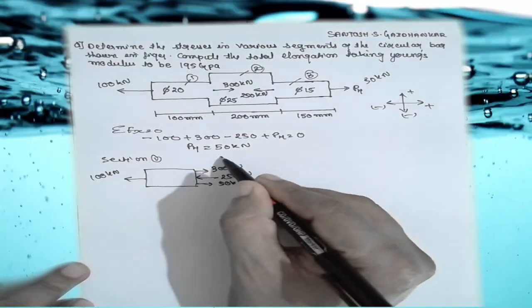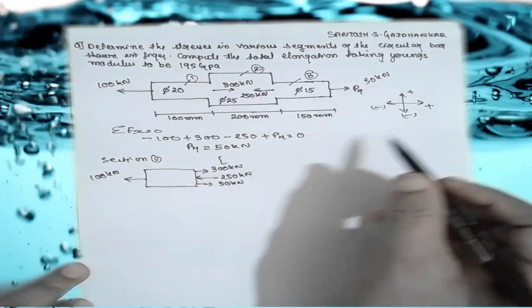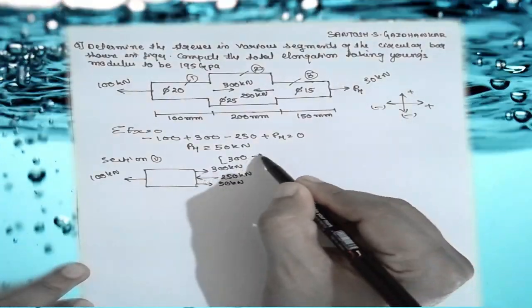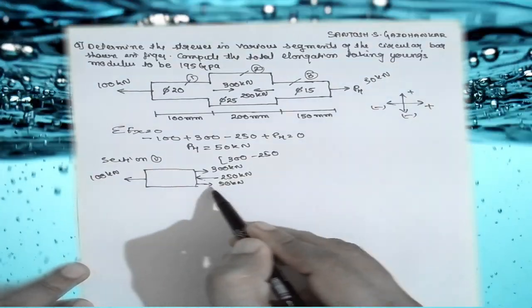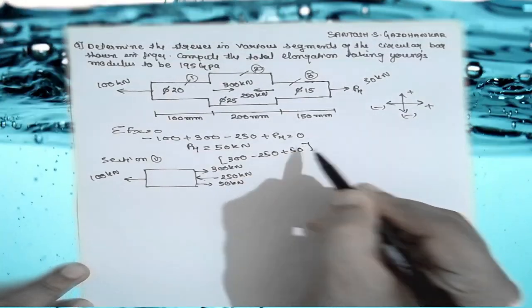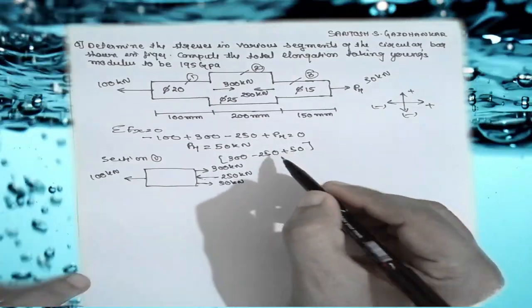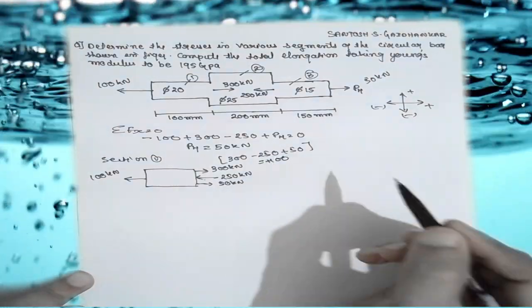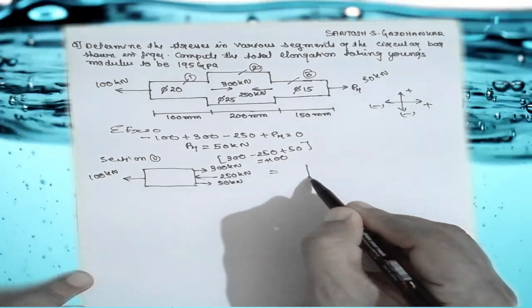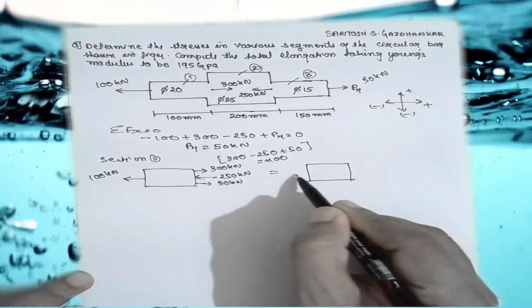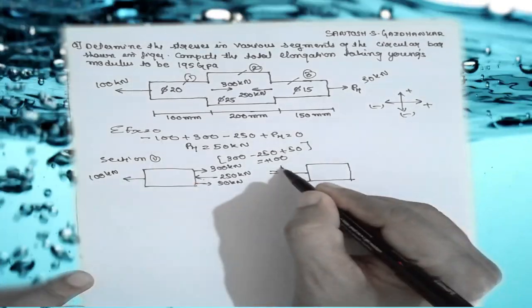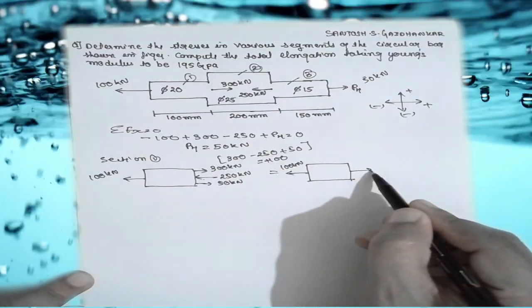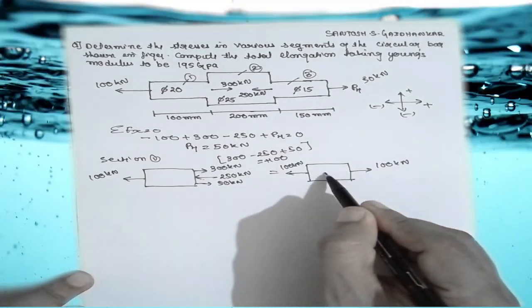To calculate section 1: the 300 kN arrow indicates positive, so write +300; the 250 kN arrow indicates negative, so minus 250; and the 50 kN arrow indicates positive, so plus 50. The result is positive 100 kN. Since the answer is positive, the arrow points outward — this is tension, +100 kN.